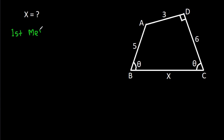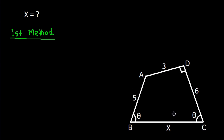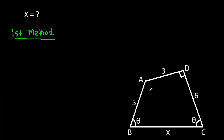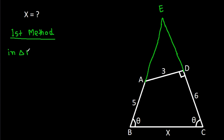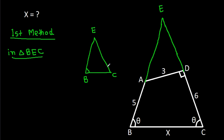The first method: if we extend AB and CD, suppose this point is E, then in triangle BEC the two angles are equal — that is theta — so BE will be equal to CE.